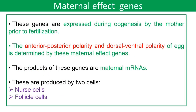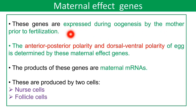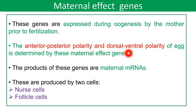The first type of pattern regulating genes are maternal effect genes. These genes are expressed during oogenesis by the mother prior to fertilization. They are responsible for determination of the anterior-posterior polarity and dorsal-ventral polarity of the egg. The products of these maternal genes are maternal mRNAs, produced by two types of cells: nurse cells and follicle cells.